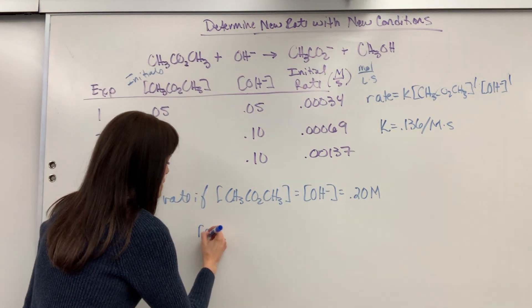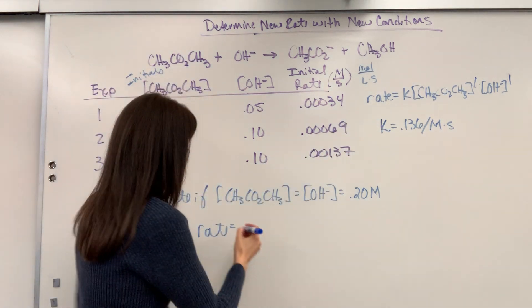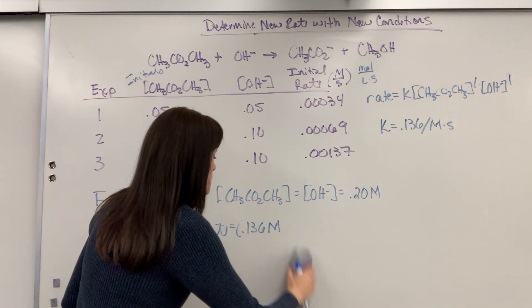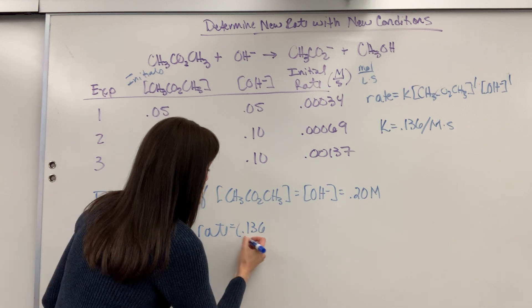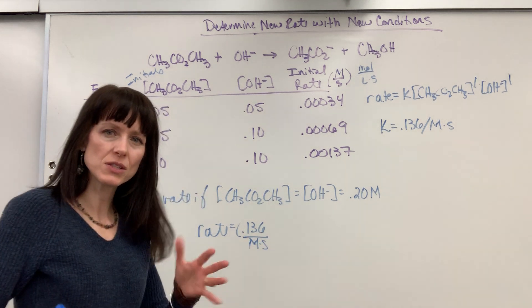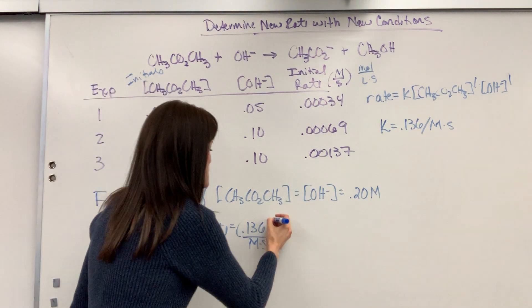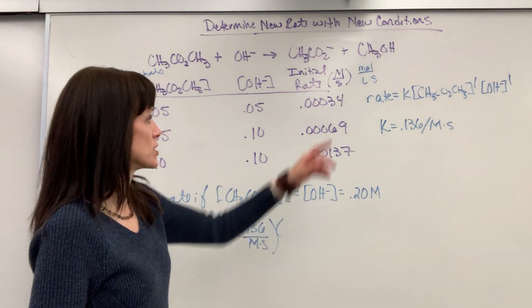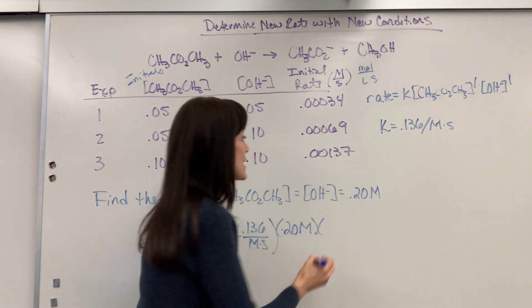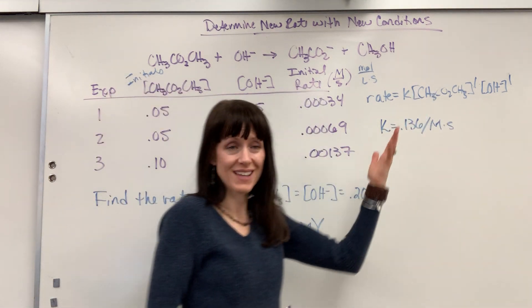Rate will equal K, which is 0.136 per molarity times seconds. I think it's easier to see the math times the concentration of methyl acetate right here, 0.20 molar times the concentration of hydroxide,